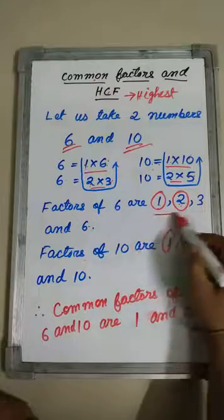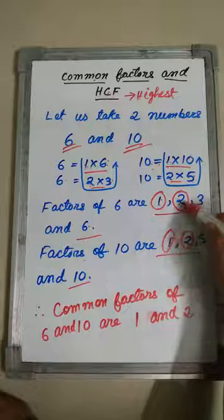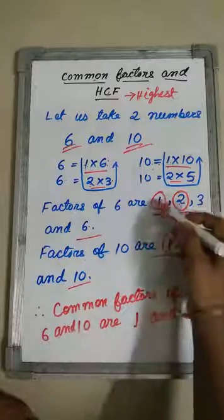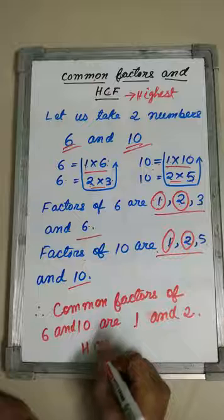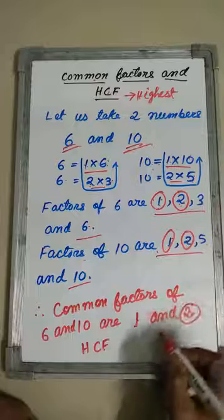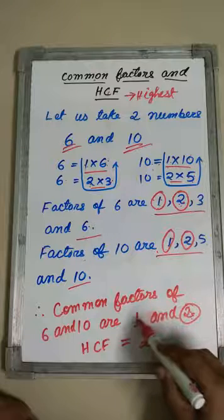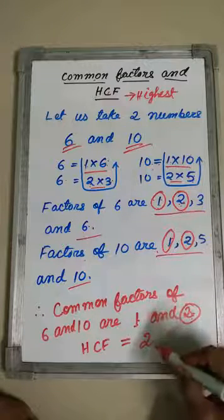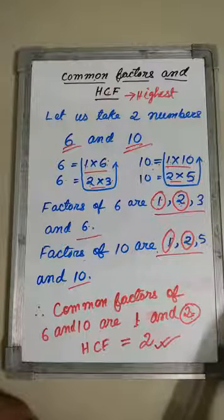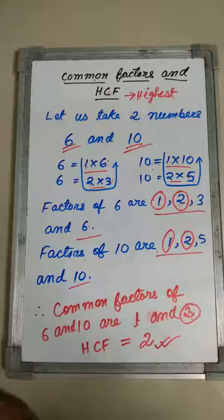I can see from these factors: 1 is here and 1 is also here; 2 is here and 2 is also here. So, 1 and 2 are the common factors of 6 and 10. The highest of these two factors is 2, and HCF is 2. The greatest among the common factors is the HCF, also called the highest common factor. I hope you have understood this.